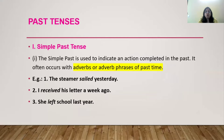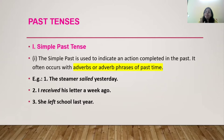First is simple past tense. How and where a simple past tense is used and for what purpose it is used. The simple past is used to indicate an action completed in the past. It often occurs with adverbs or adverb phrases of past time. For example, 'The steamer sailed yesterday.' 'I received his letter a week ago.' 'She left school last year.' In all these three sentences, the verbs used — sailed, received, and left — come under the second form of verb.